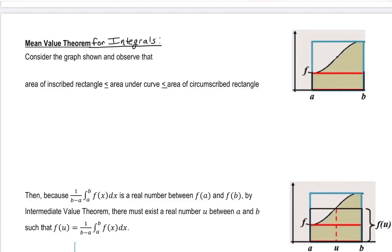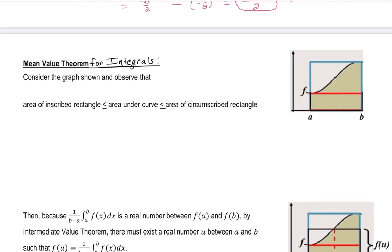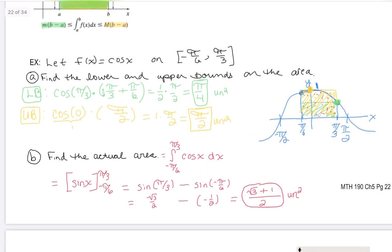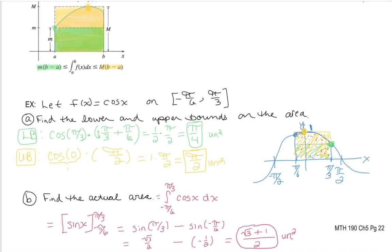We're going to continue section 5.4 and talk about the mean value theorem for integrals. I'll first develop it using where we left off last time — the upper and lower bounds theorem, which said the area under the curve, the definite integral, can be bounded between an upper and lower bound that are essentially the inscribed and circumscribed rectangles. The green rectangle was the inscribed, and the yellow one was the circumscribed rectangle.